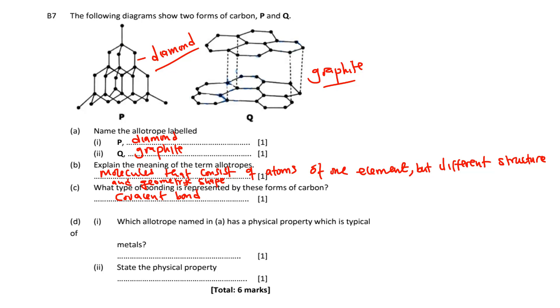Then D: which allotrope named in A has a physical property which is typical of a metal? Now a typical metal conducts electricity, so in other words, which of these two conducts electricity? It is Q, not P. It is Q.